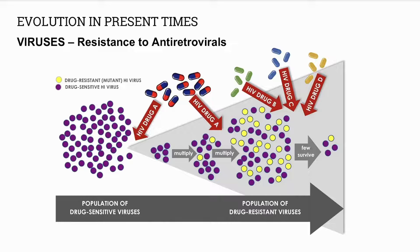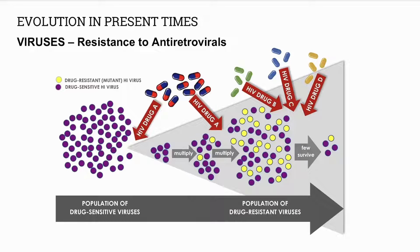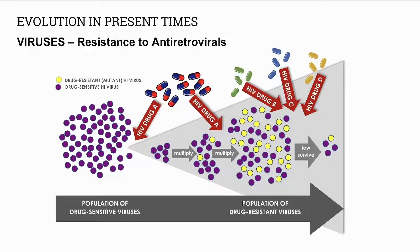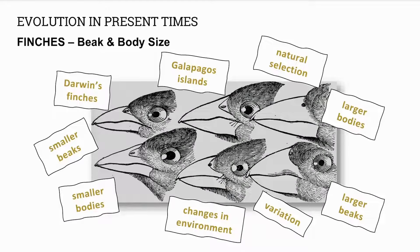Viruses, over time, can develop a mutation that makes them resistant to a particular drug. They multiply in the population and eventually we need a cocktail of drugs to deal with these drug-resistant viruses. Darwin also found variation in the beak and body size in the Galapagos finches. A bird with a favorable characteristic, like a big beak or a larger body, survives, reproduces, and passes on the favorable trait — this is an example of modern-day evolution in finch species.